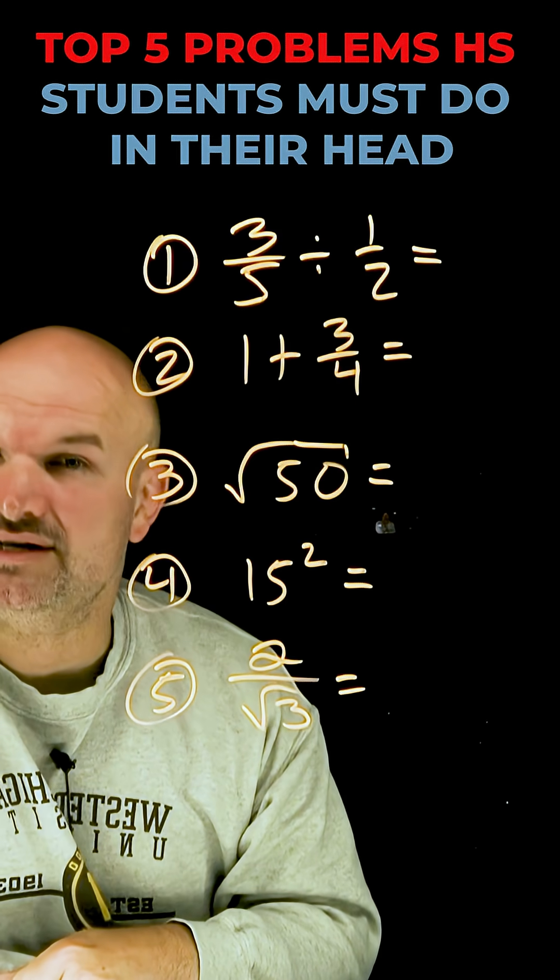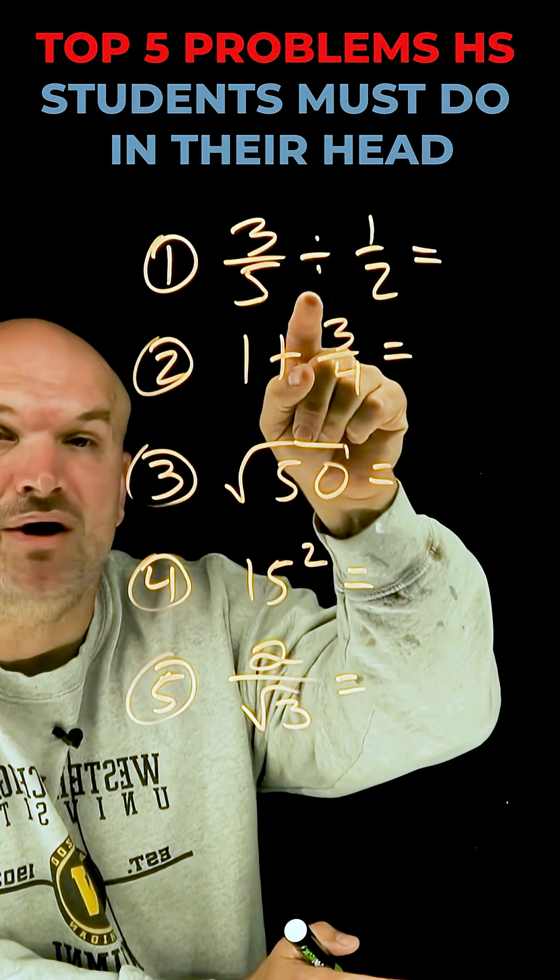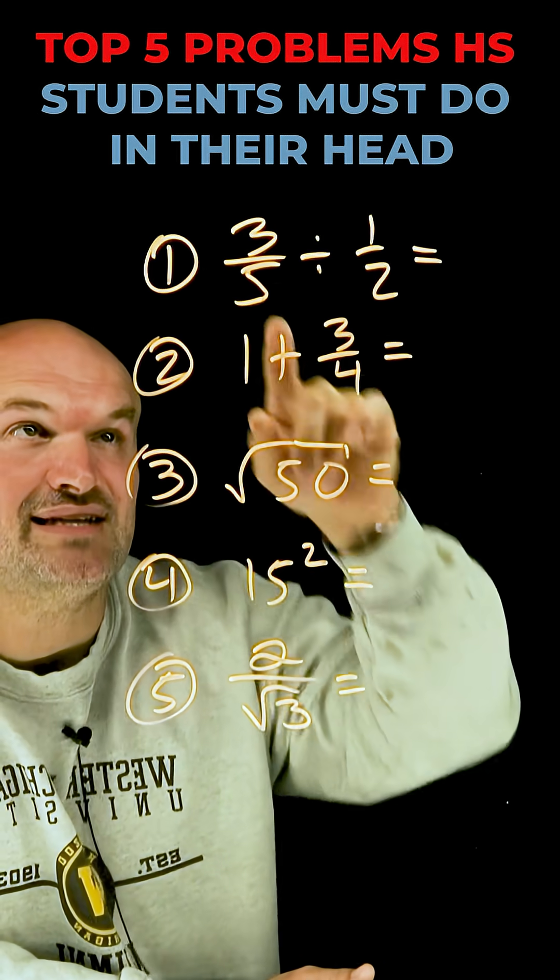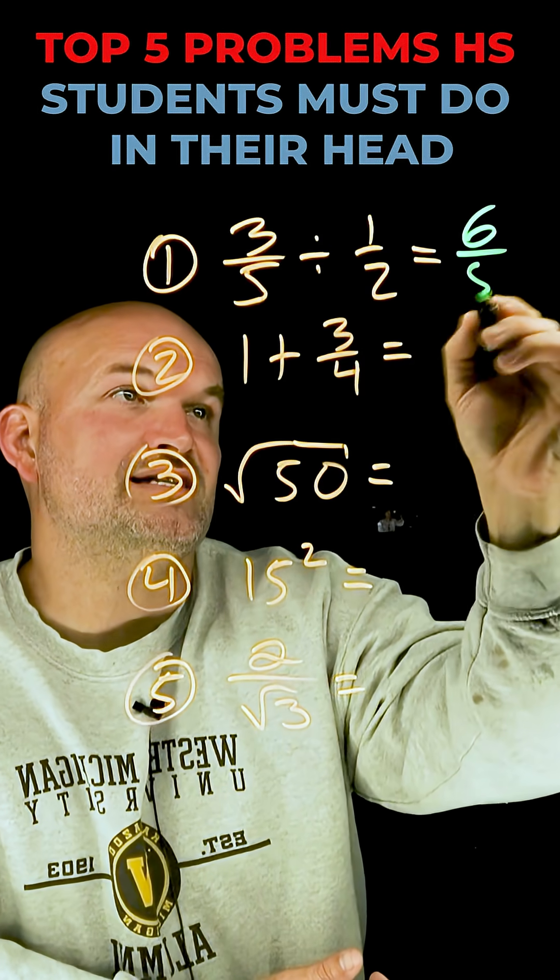The first example is a fraction divided by another fraction. Remember, a fraction divided by a fraction is the same thing as a fraction multiplied by its reciprocal. So in this case, I'm going to have 3/5 times 2/1, which is simply going to be 6/5.